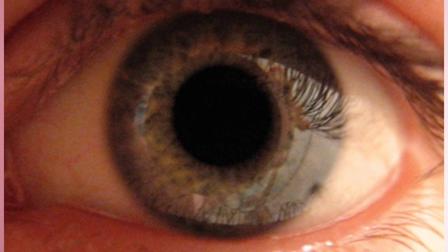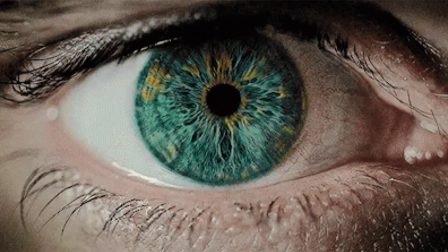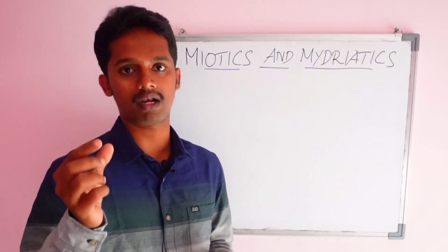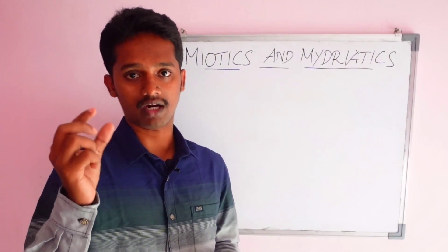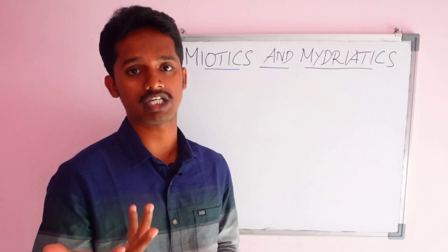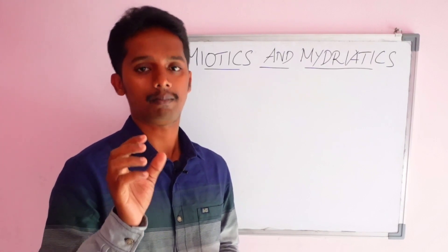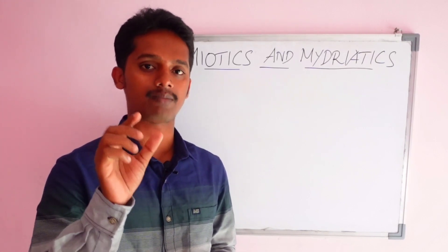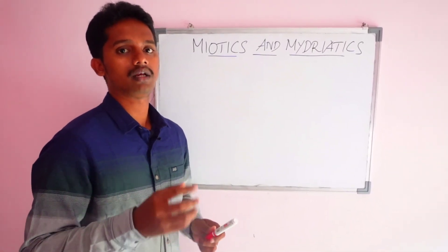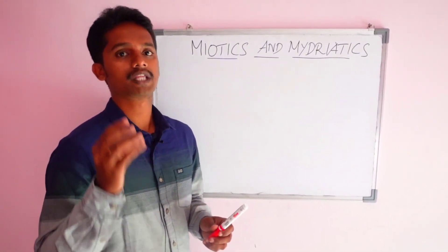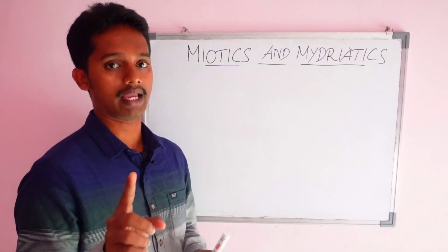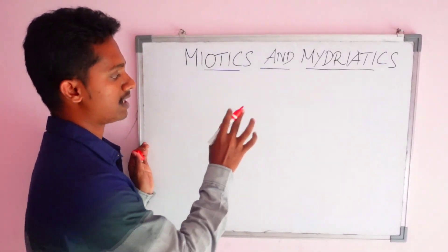When the pupil comes to meiosis or mydriasis, we can see the pupil size changes. The most important structure is the iris. The iris is part of the eyeball. This is how the iris appears in the eyeball.